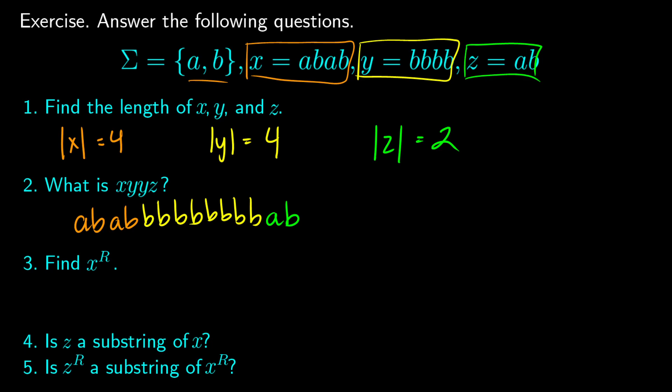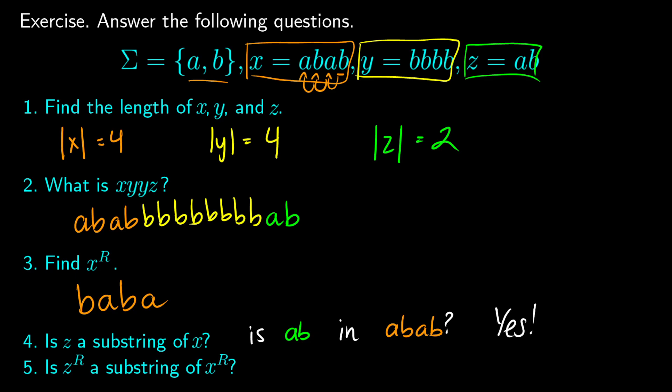Now find the reverse of x. Since x is a, b, a, b, reading right to left gives b, a, b, a. So xᴿ = b, a, b, a. Then, is z a substring of x? z is 'a, b' and x is 'a, b, a, b'. Yes — 'a, b' appears at the start and also in the middle of x, so z is indeed a substring of x.